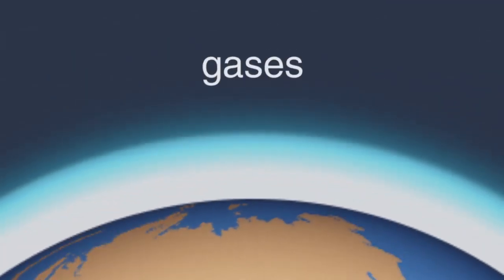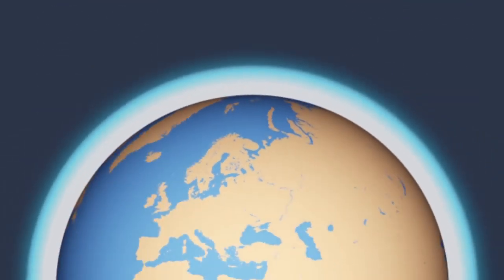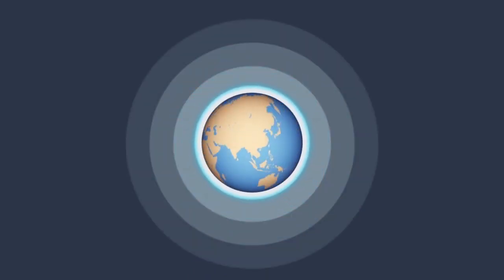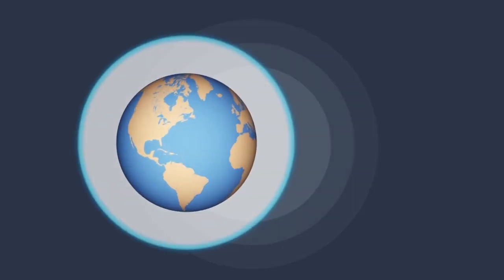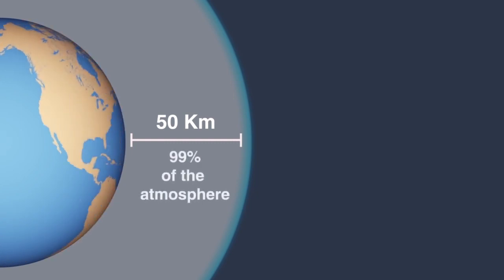Our atmosphere is made up of gases, mostly nitrogen and oxygen. They're held to the earth by gravity, a sort of ocean of air. Because air is compressible it gets less and less dense as you get further from the earth. Let's consider the first 50 kilometers where 99% of the atmosphere is found.